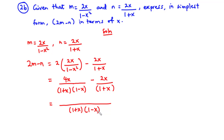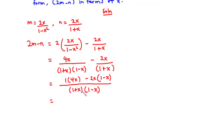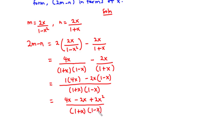1 plus x times 1 minus x goes into 1 plus x times 1 minus x once. So 1 times 4x gives us 4x, and then negative 2x times 1 plus x: 1 times negative 2x is negative 2x, and negative x times negative 2x is plus 2x squared. Divided by 1 plus x times 1 minus x. Now 4x minus 2x is 2x, so we can write 2x squared plus 2x over 1 plus x times 1 minus x.